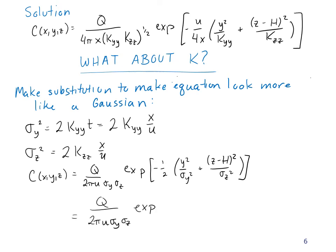I can rearrange this to look more like a Gaussian. We still have Q/(2πuσ_y σ_z) in front, but now I'll separate the exponentials: exp(-y²/2σ_y²) × exp(-(z-h)²/2σ_z²). If you look at the format of the normal equation, it's very similar to this.